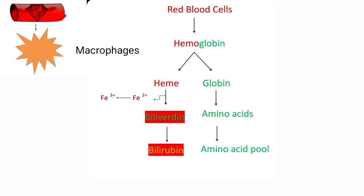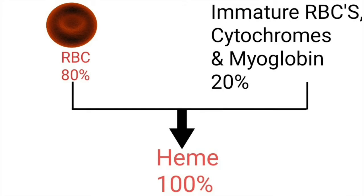This hemoglobin is further degraded to produce a protein part — globin — and this globin is hydrolyzed to amino acids, which are channeled into the body's amino acid pool. The iron which is liberated is reutilized, and the iron-free porphyrin ring is converted to bilirubin. Out of 100% of heme degraded to bilirubin, 80% comes from red blood cells and the remaining 20% from immature erythrocytes, myoglobin and cytochromes.